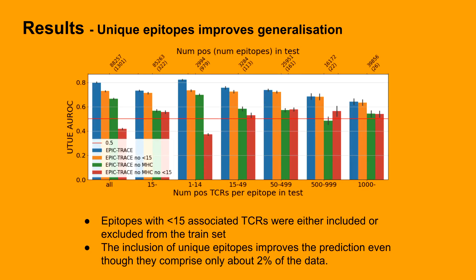We also studied the effect of including or excluding epitopes that had only fewer than 15 associated TCRs, changing the amount of unique epitopes in the training data. These epitopes are also paired with many unique MHCs, so we repeated the experiments without the MHC information. As we can see from the plot, the less frequent epitopes did improve the prediction, even if the MHC information was not used.